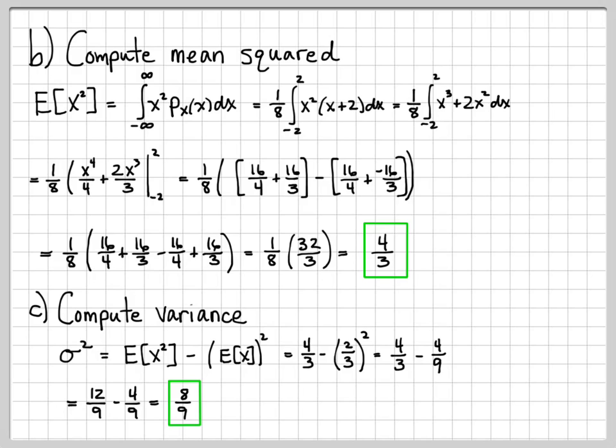One sanity check here: variance always has to be greater than or equal to zero. If you had made a slight mistake and ended up with a negative number like minus one fourth or negative 7, that would be a big clue that something went wrong, because variance is at its very least zero. The fact that we got 8/9 is a reasonable positive number, so there's no big clue that we need to re-examine anything.